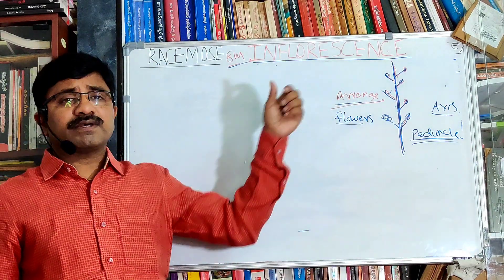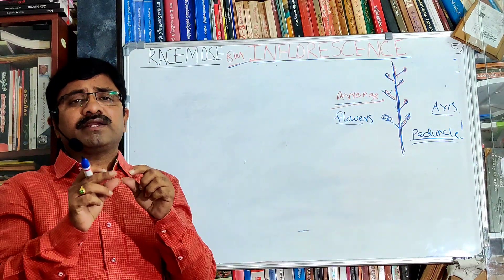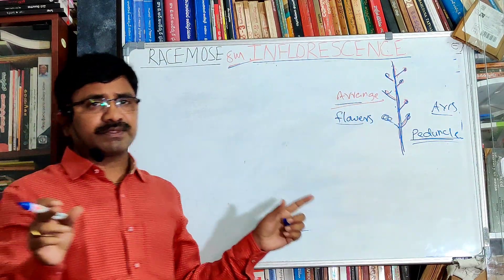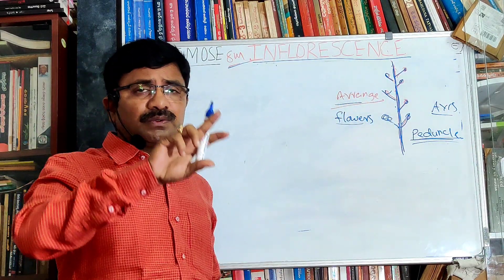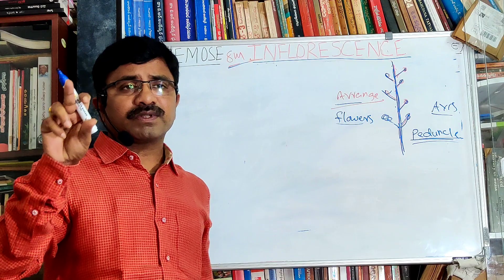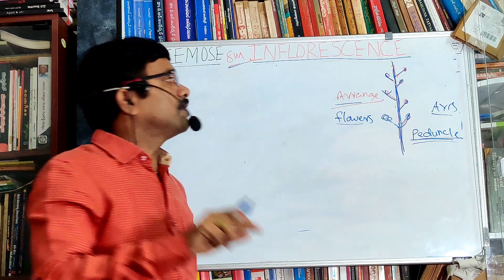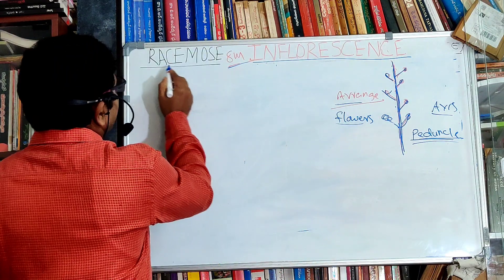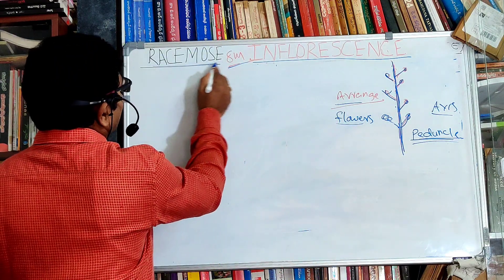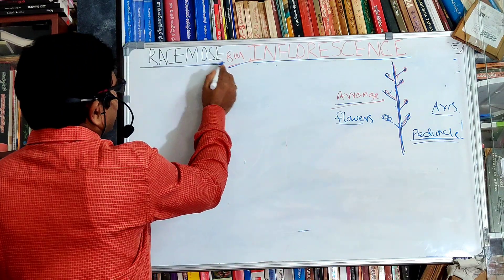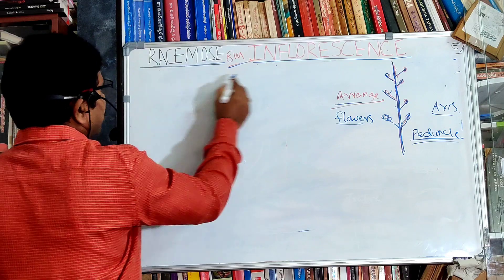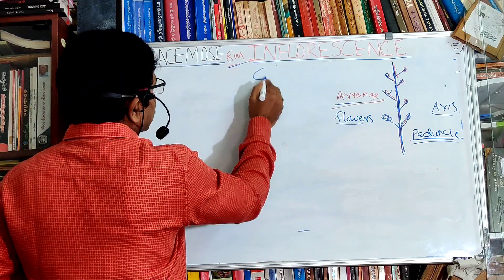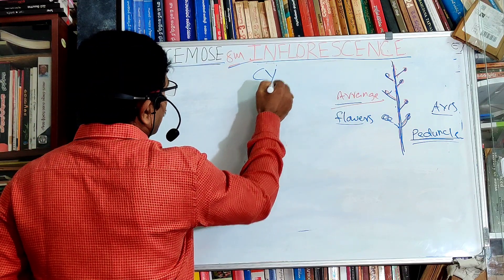Inflorescence is of mainly two types found in flowering plants. The first one is racimose, and the second one is cymose.